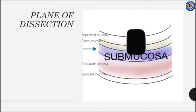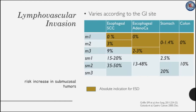The plane of dissection in ESD is the submucosa. Dissection is done in the middle third of the submucosa to avoid blood vessels in the upper third, and to avoid being close to the muscle as in the lower third. Curative resection after ESD is dependent upon the presence or absence of lymphovascular invasion, which varies according to the GI site, type of tumor, and depth of the tumor.